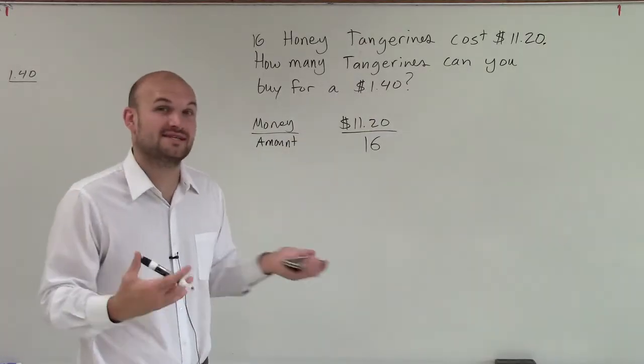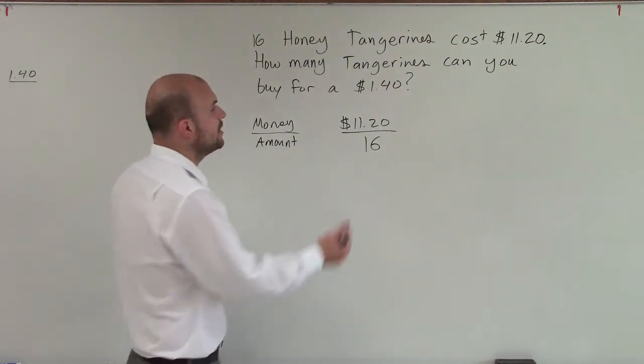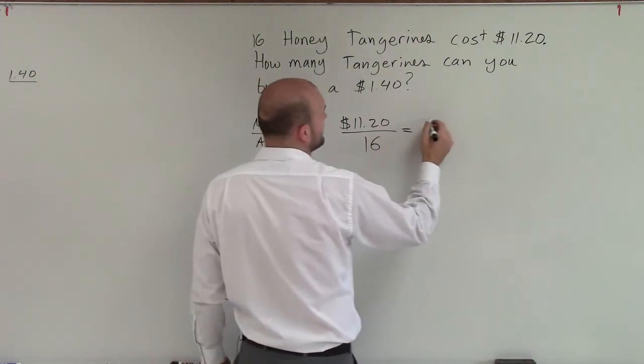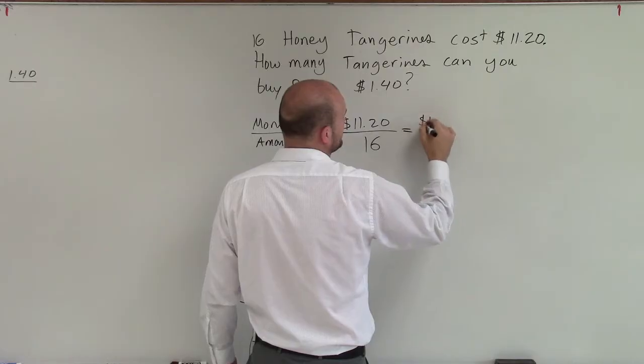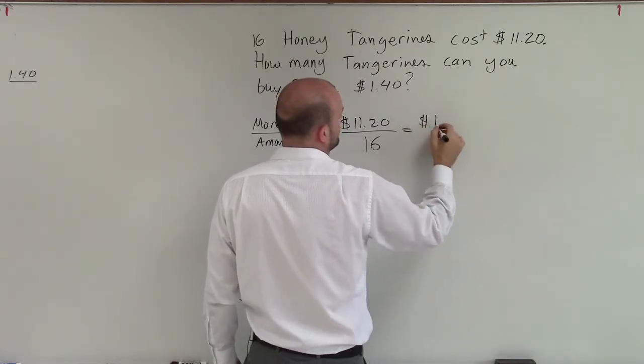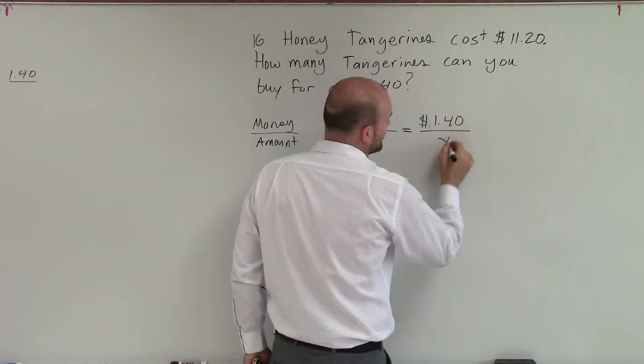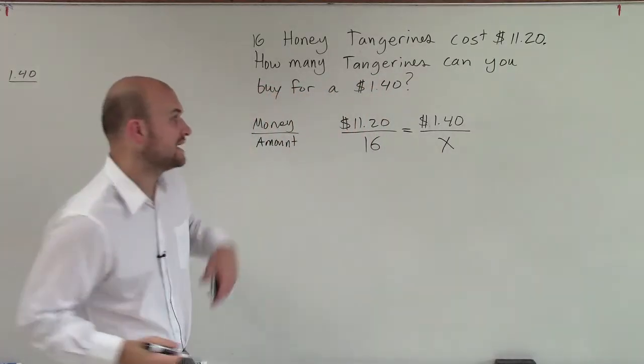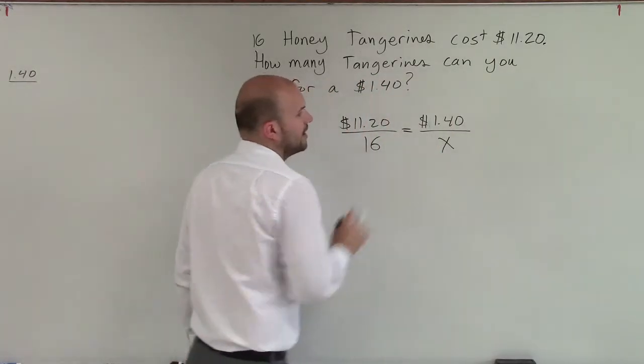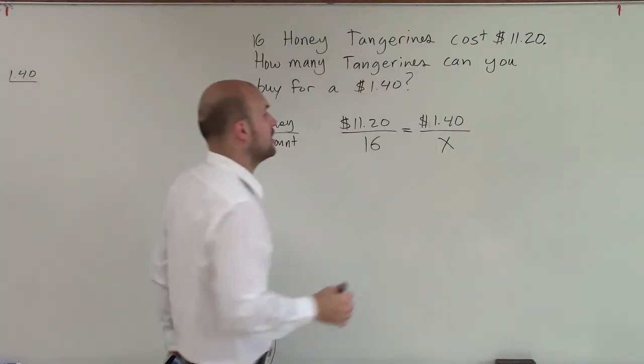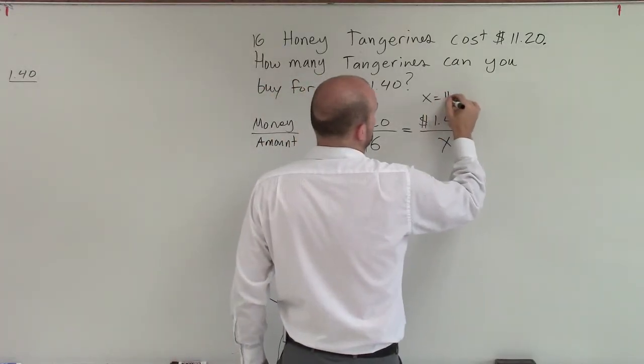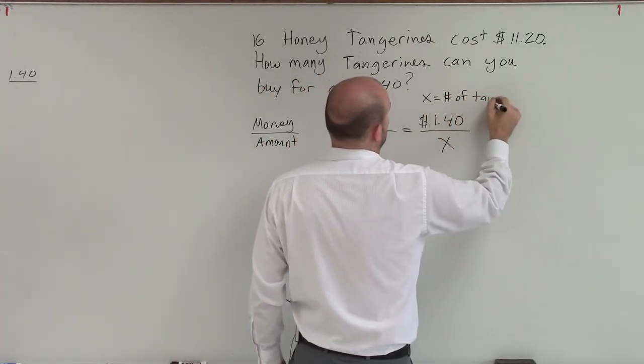And that would be fine. That would say, this is how much we can get per tangerine. Or we can also say, well, we have $1.40. How many is that going to yield us? So now I've introduced an x, so we've got to make sure we actually label our variable. So x equals the number of tangerines.